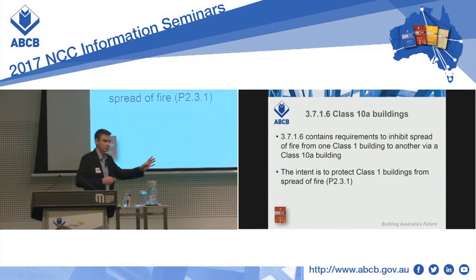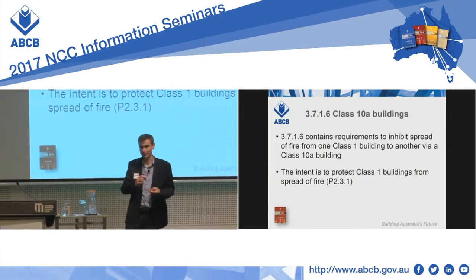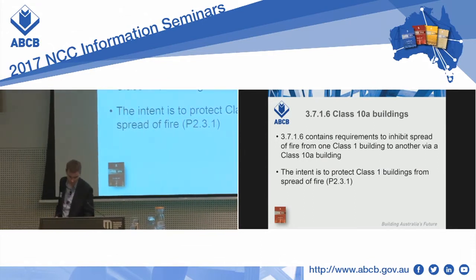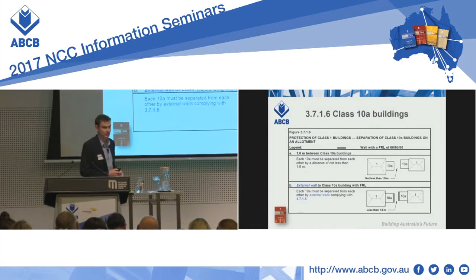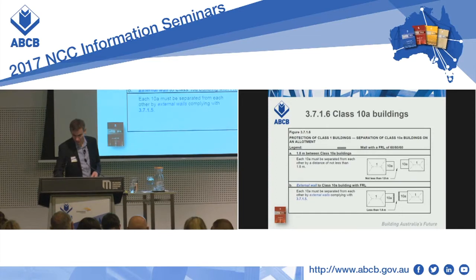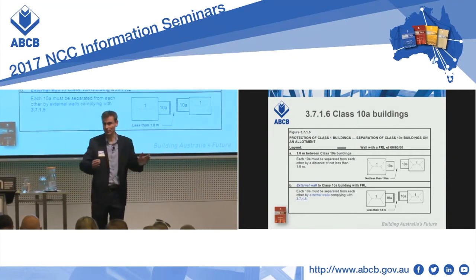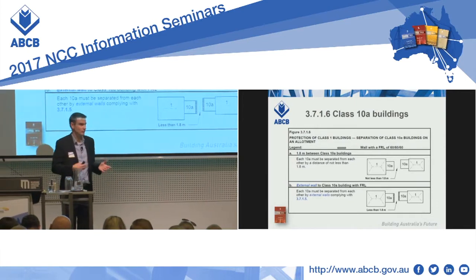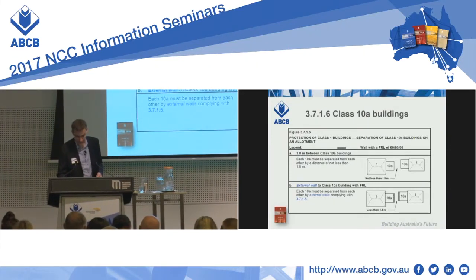The class one is the house or the boarding house, and the class 10A could be the shed, could be a deck, could be the carport. That's why we have deemed-to-satisfy provisions in 3.7.1, and these refer to tables such as 3716 and figure 3716, where we achieve this performance requirement by stopping the fire getting from one class one to another — by having physical separation between the two, as in the top example, or by installing walls which have an FRL, which prevent the fire spread from getting from one class one to the other via the 10A.